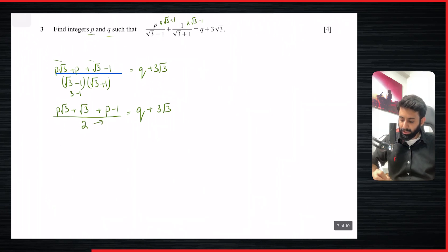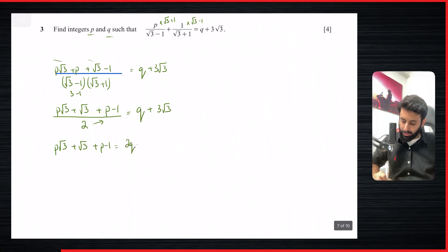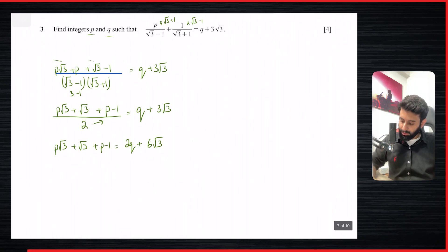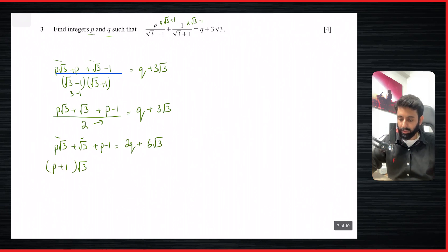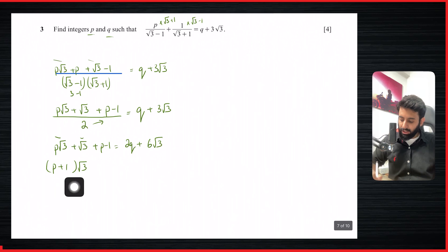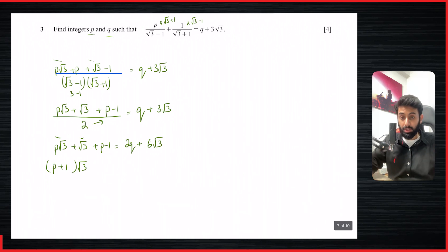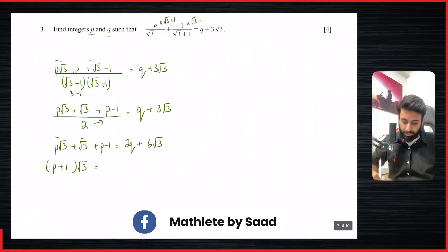Now cross-multiplying, we have p root 3 plus root 3 plus p minus 1 equals 2q plus 6 root 3. Before applying the comparison method, take root 3 as a common factor on the left-hand side: root 3 times (p plus 1) plus (p minus 1) equals 2q plus 6 root 3. I've written it in this order to make the comparison easier.